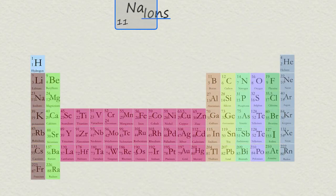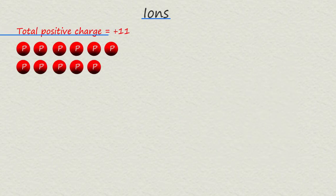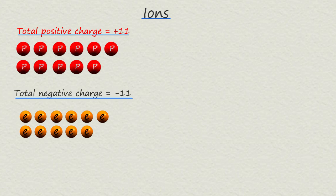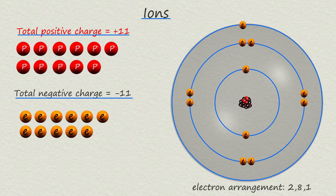Consider the element sodium, a very reactive metal found in group one of the periodic table. Sodium is element number 11, so an atom of sodium will have 11 protons in its nucleus and 11 electrons in its energy levels. The first shell holds two electrons, the second holds eight, leaving one electron in the outer shell — giving sodium an electron arrangement of 2-8-1.